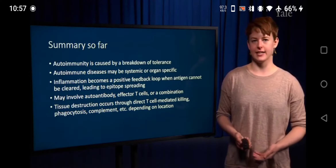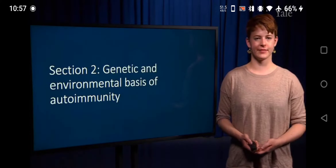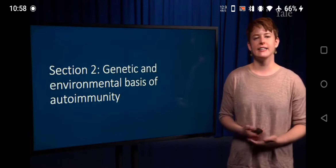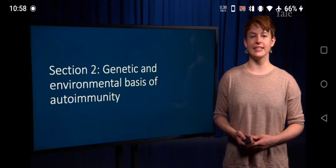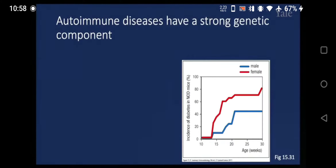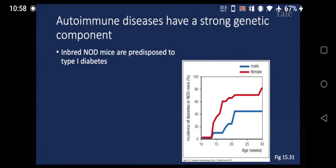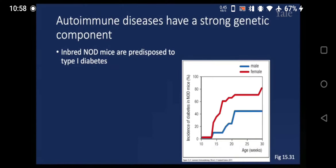Now we're going to talk about the genetic and environmental factors that can lead to the development of autoimmunity. Autoimmune diseases actually have a very strong genetic component. For example, inbred NOD mice are predisposed to develop type 1 diabetes. In figure 15-31, we can see over time more and more of these NOD mice by themselves develop type 1 diabetes.